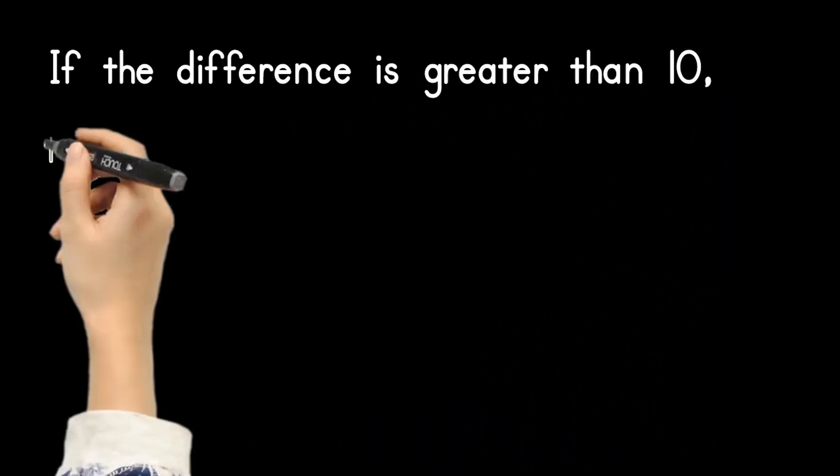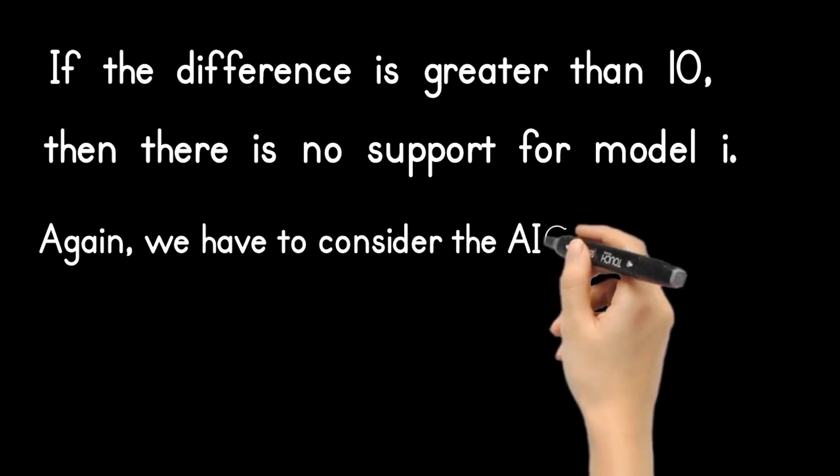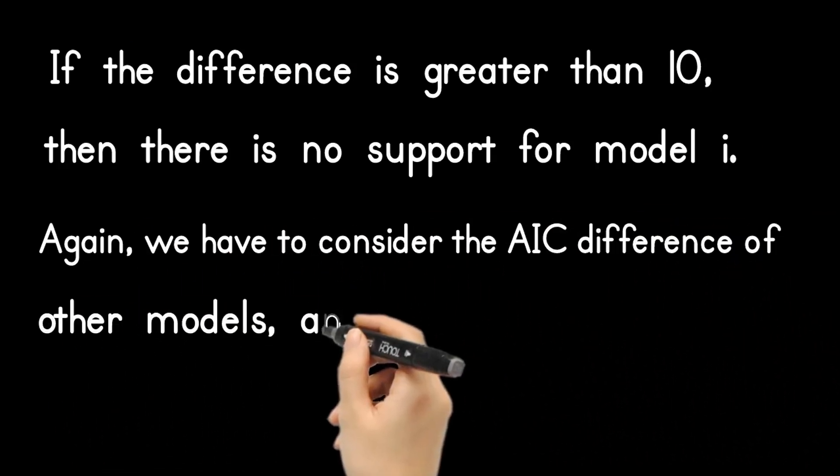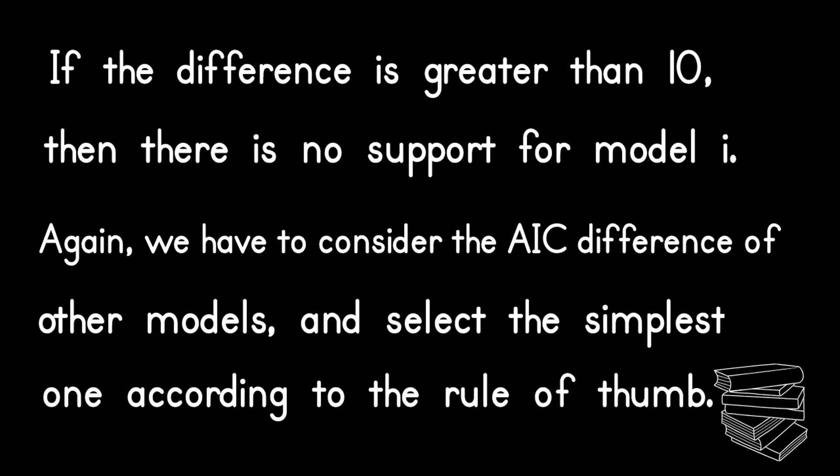If the difference is greater than 10, then there is no support for model i. Again, we have to consider the AIC difference of other models and select the simplest one according to the rule of thumb.